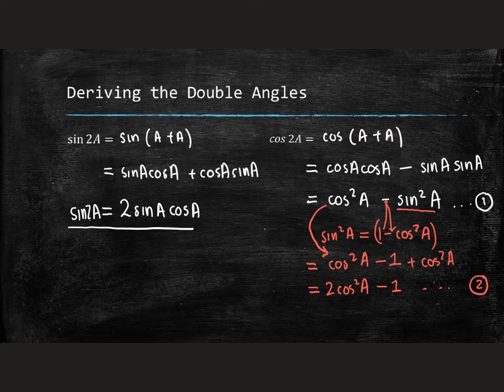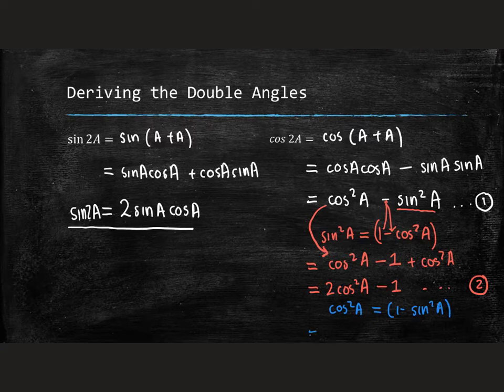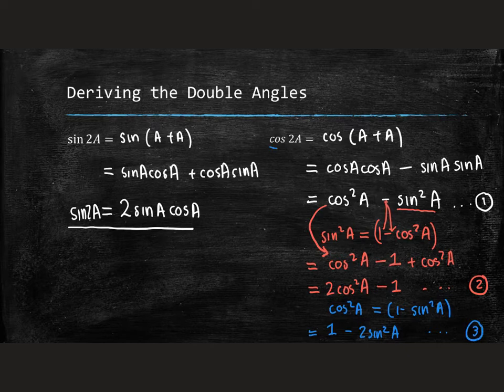If I had used the other expansion of cos squared equals 1 minus sin squared from grade eleven, I would land up with the third form of this expression, which is 1 minus 2 sin squared a. And so that's why the cos double angle has three different forms.